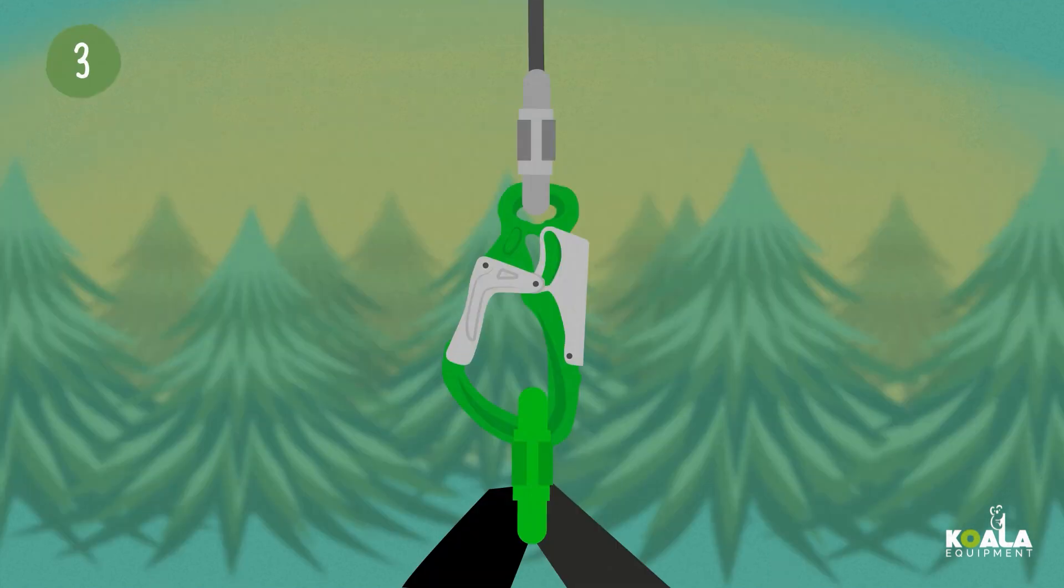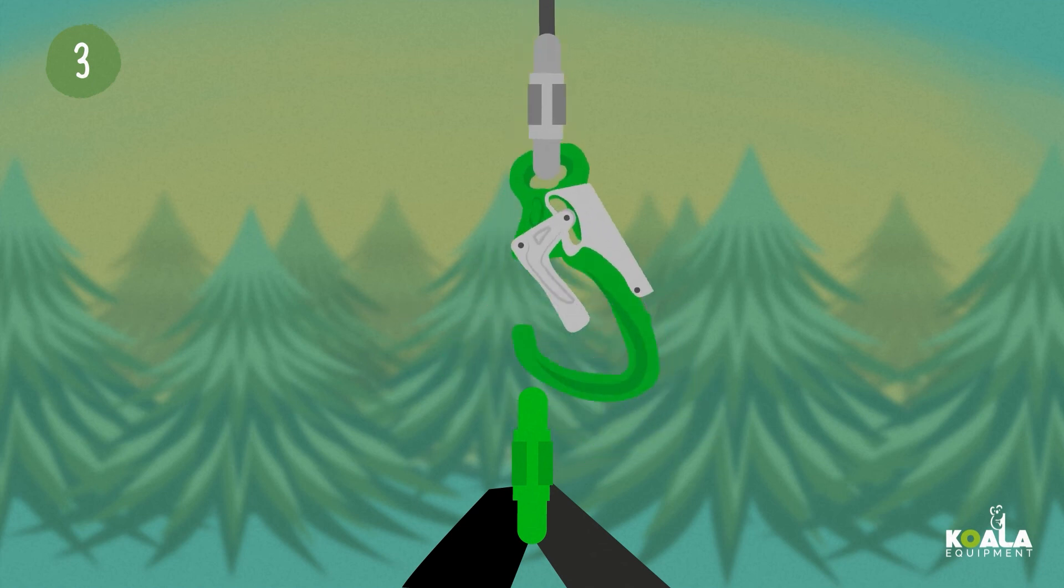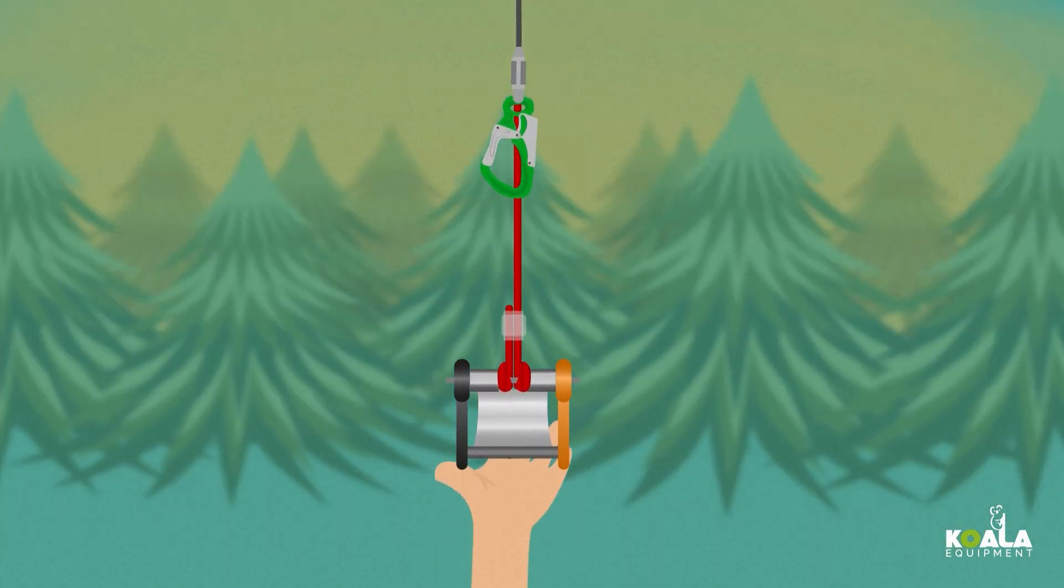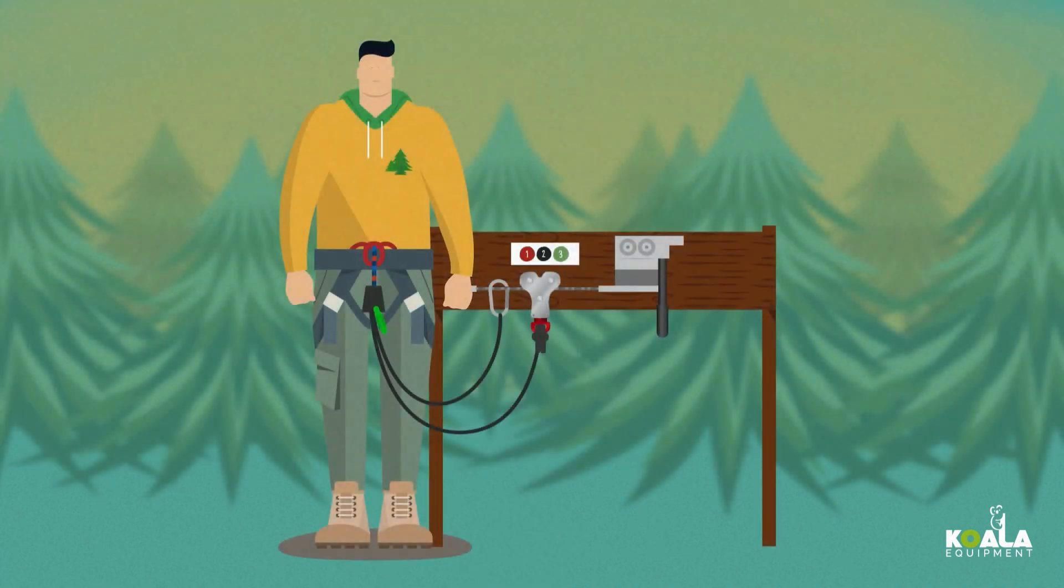Step 3. Green. Disconnect the green carabiner by pressing on both grey sides simultaneously. Gently release the material for the next person. You are now back on the continuous Belay Lifeline.